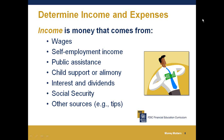Now we will look at the next step: determining your income and your expenses. Income is money that comes to you from a variety of ways — wages, self-employment income, public assistance such as temporary assistance for needy families or food stamps, child support or alimony, interest and dividends, Social Security, and other sources like tips.